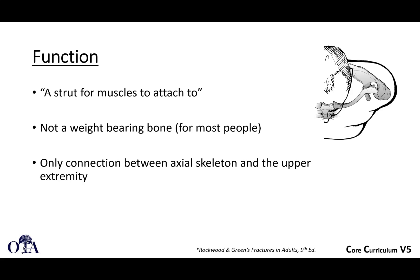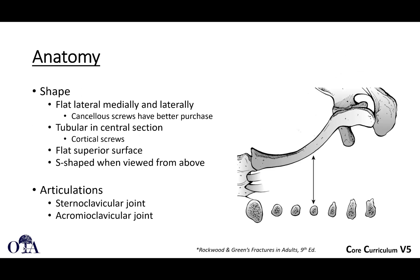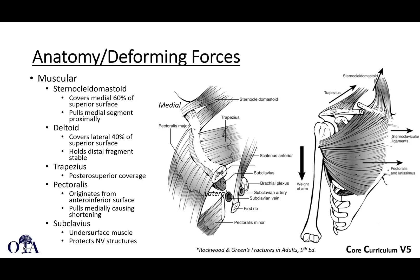The clavicle is, to some extent, a strut for muscles to attach to. It's not a weight-bearing bone for most people, but it is the only connection between the axial skeleton and the upper extremity. The shape is flat medially and laterally, where cancellous or locking screws work better, and more tubular in the central section where cortical screws can be used. It has a flat superior surface and is somewhat S-shaped when viewed from above, with articulations at the sternoclavicular and acromioclavicular joints.